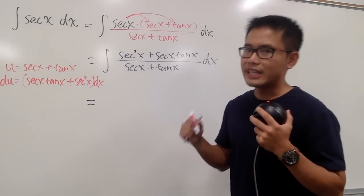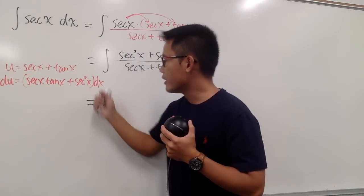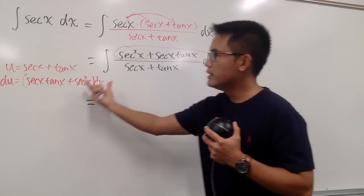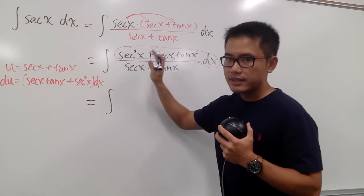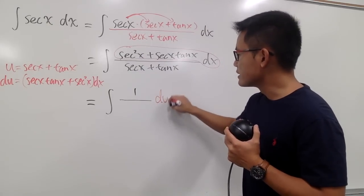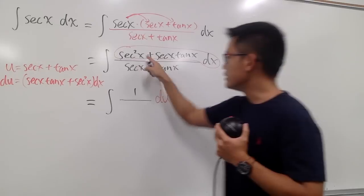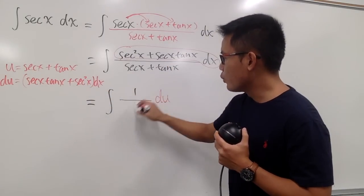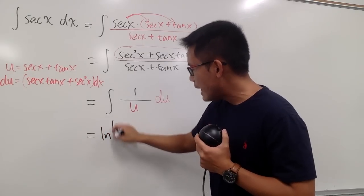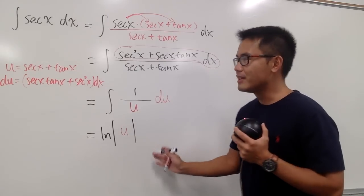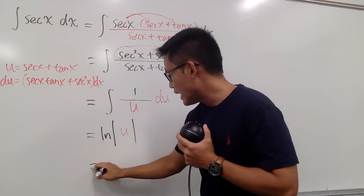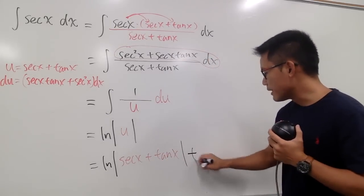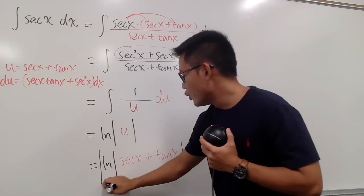We let u equal to secant x plus tangent x. Differentiating gives du equal to secant x tangent x plus secant squared x, all times dx. As you can see, the entire numerator with dx is precisely du. So we are just integrating 1 over u du, which gives us ln of the absolute value of u. We are not done yet because we have to go back to the x world.